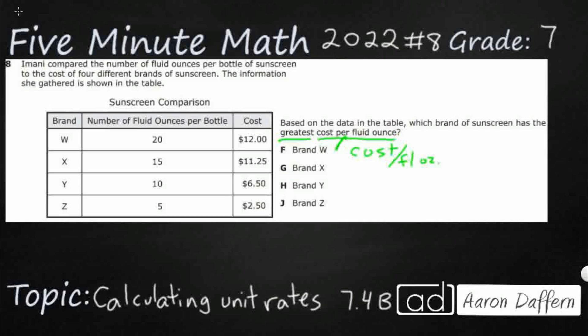We can take each of these brands, and let me start with W as an example. We can take the cost, that is 12, per fluid ounce. And so we are just going to see which of these ends up being the greatest. This is a fraction here, so we can reduce that. That is 6 tenths.